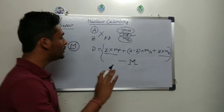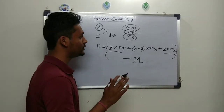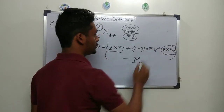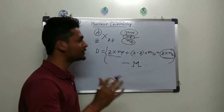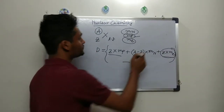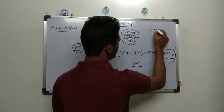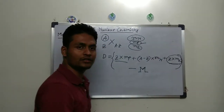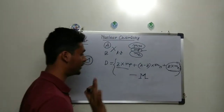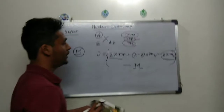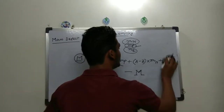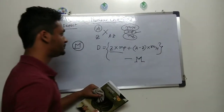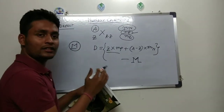In nuclear chemistry, one important thing to understand: although we include the mass of electrons in the formula, the mass of electron is very small compared to the mass of proton. The proton mass is slightly above 1 amu, but the electron mass is far less than 1 amu. So in nuclear chemistry, we treat the electron mass as negligible and ignore it.